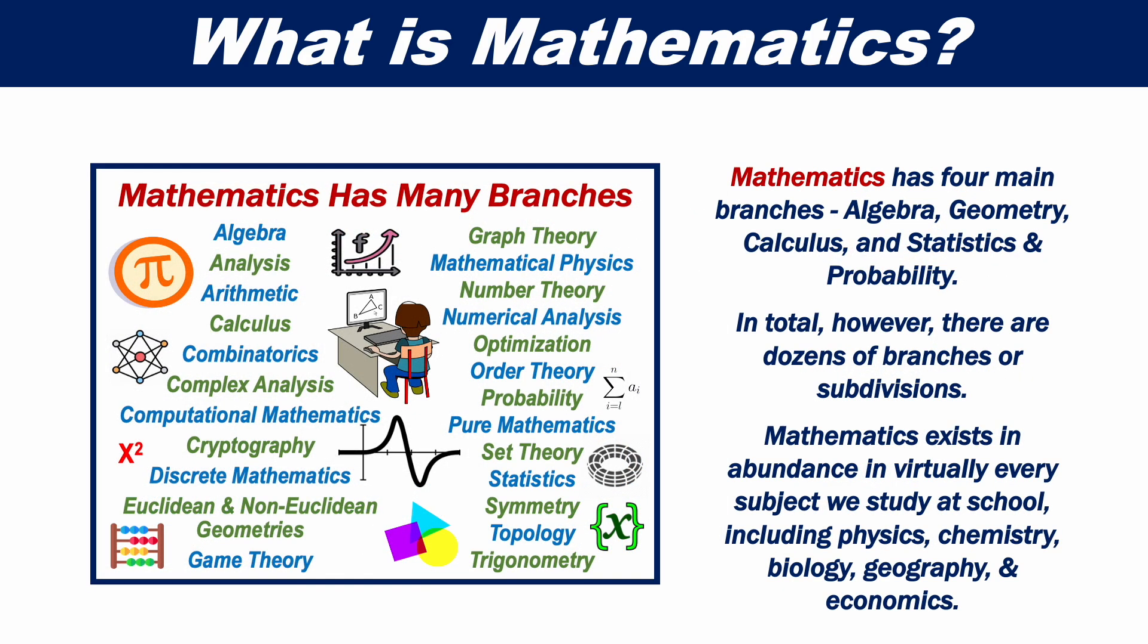Mathematics has four main branches: algebra, geometry, calculus and statistics and probability. In total, however, there are dozens of branches or subdivisions.